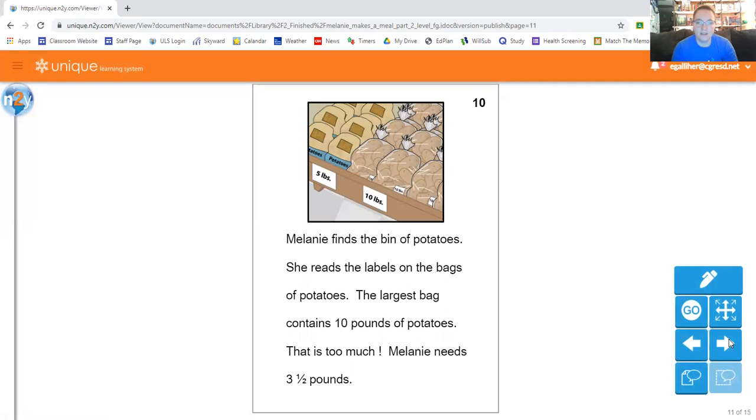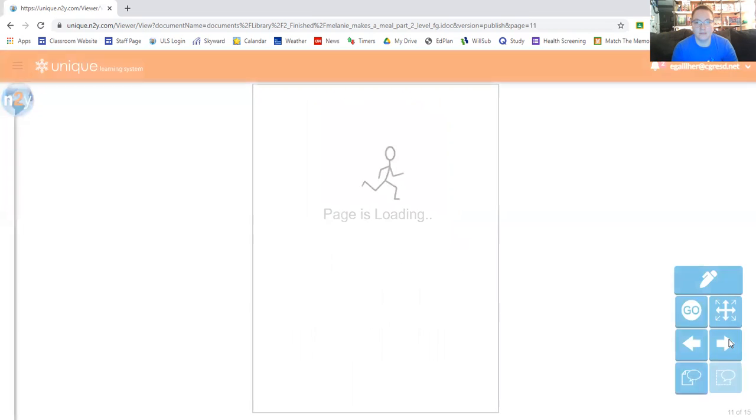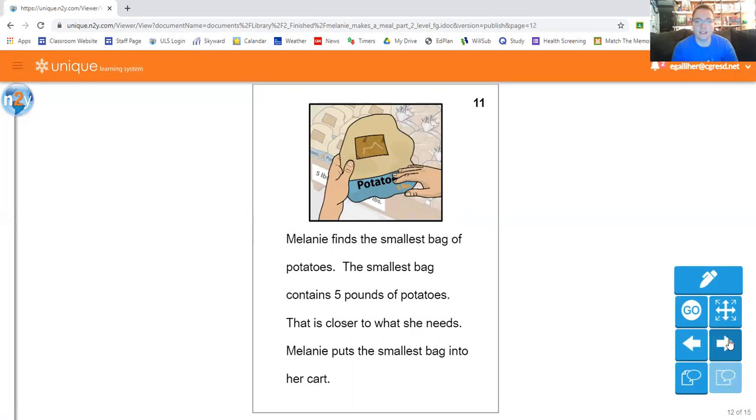Melanie finds the bin of potatoes. She reads the labels on the bags of potatoes. The largest bag contains 10 pounds of potatoes. That is too much. Melanie needs three and a half pounds. Melanie finds the smallest bag of potatoes. The smallest bag contains five pounds of potatoes. That is closer to what she needs. So Melanie puts the smallest bag into her cart.